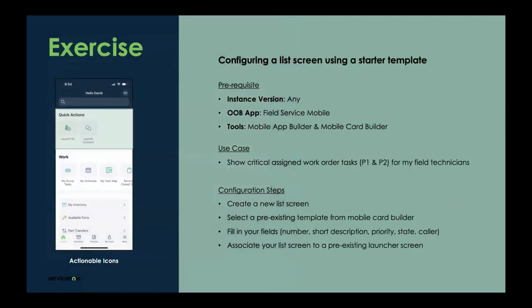There's really no better way to visualize all this than going through a quick example. I'm going to use the out-of-the-box Field Service Mobile App on the ServiceNow Agent client. Using this Field Service Mobile workflow, I'll create a new list screen that shows my critical tasks — all work order tasks that are P1 and P2 assigned to my logged-in agent. We'll do this by using one of the starter templates available in Mobile Card Builder, which gives you about 12 templates to pull from.